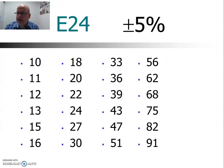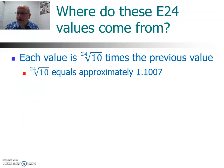Another series is the E24, where you divide up the decade 24 times. This also has two significant figures and represents plus or minus 5% tolerance. You calculate the values by taking the 24th root of 10 and multiplying by the previous value. Notice that the root of 10 corresponds to E — so E24 uses the 24th root of 10 to generate each successive value.